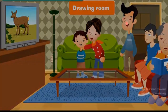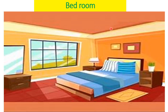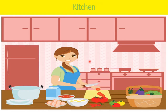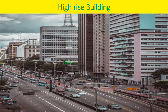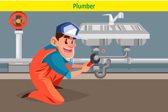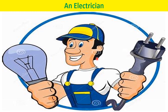Nowadays people stay in pakka houses, which are made with big bricks, iron rods, cement, and concrete. They have different rooms — a living room, a bedroom for sleeping, a washroom for bathing, and a separate kitchen for cooking. People also stay in high-rise buildings called apartments. A mason builds houses, a plumber fixes taps and pipes, and an electrician fixes wires and electric fixtures like fans and bulbs.